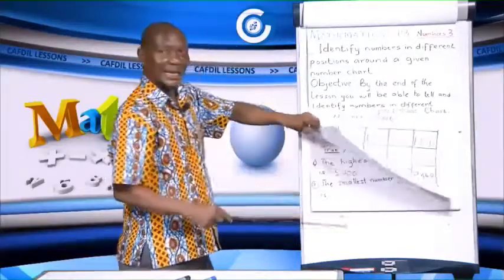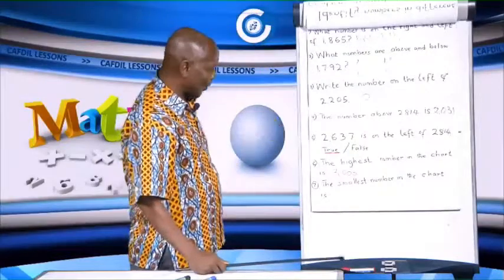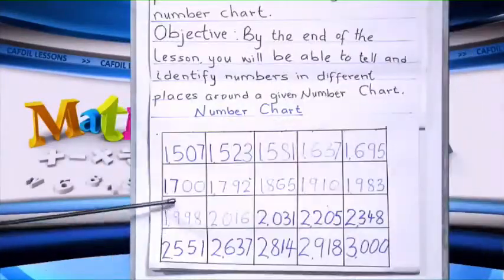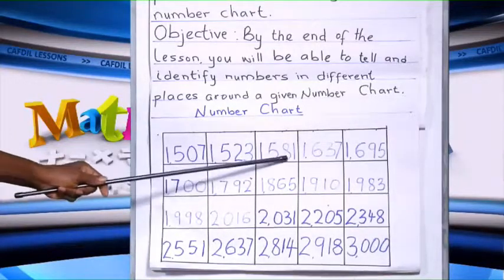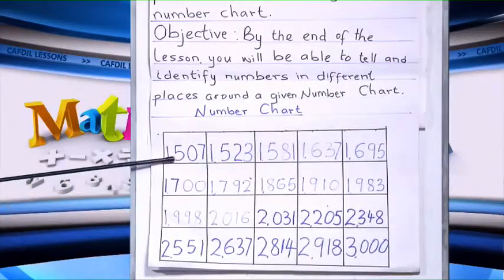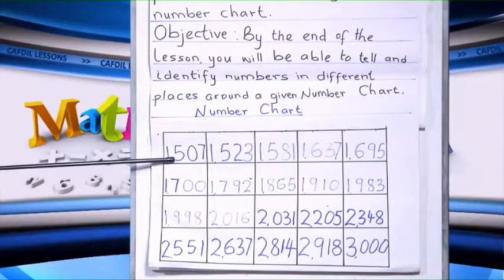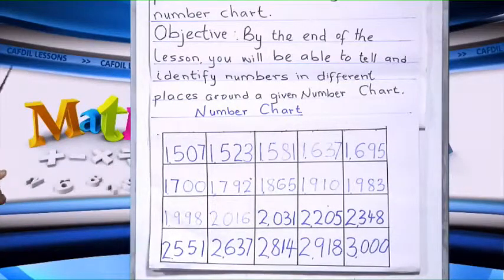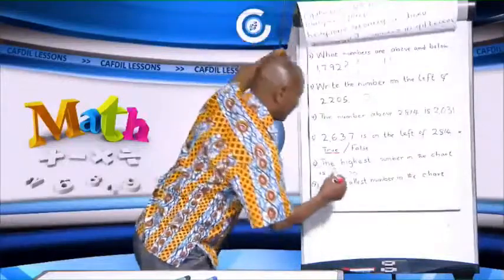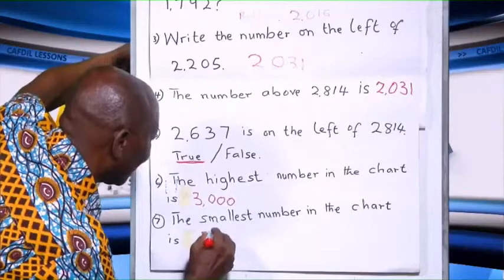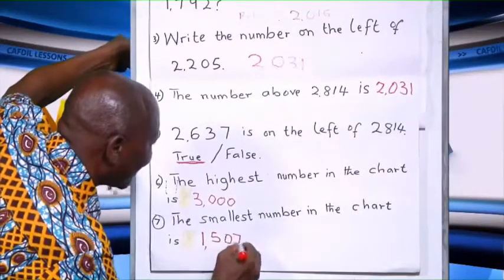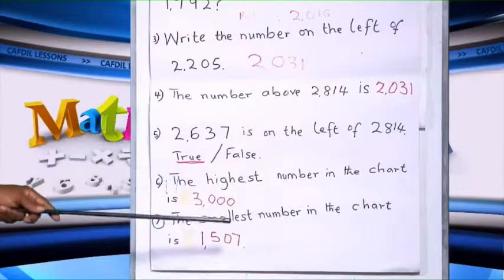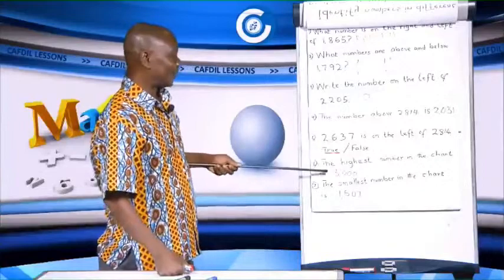The smallest number in the chart — how do you pronounce it? 1,507. The smallest number is 1,507, and the highest number is 3,000.